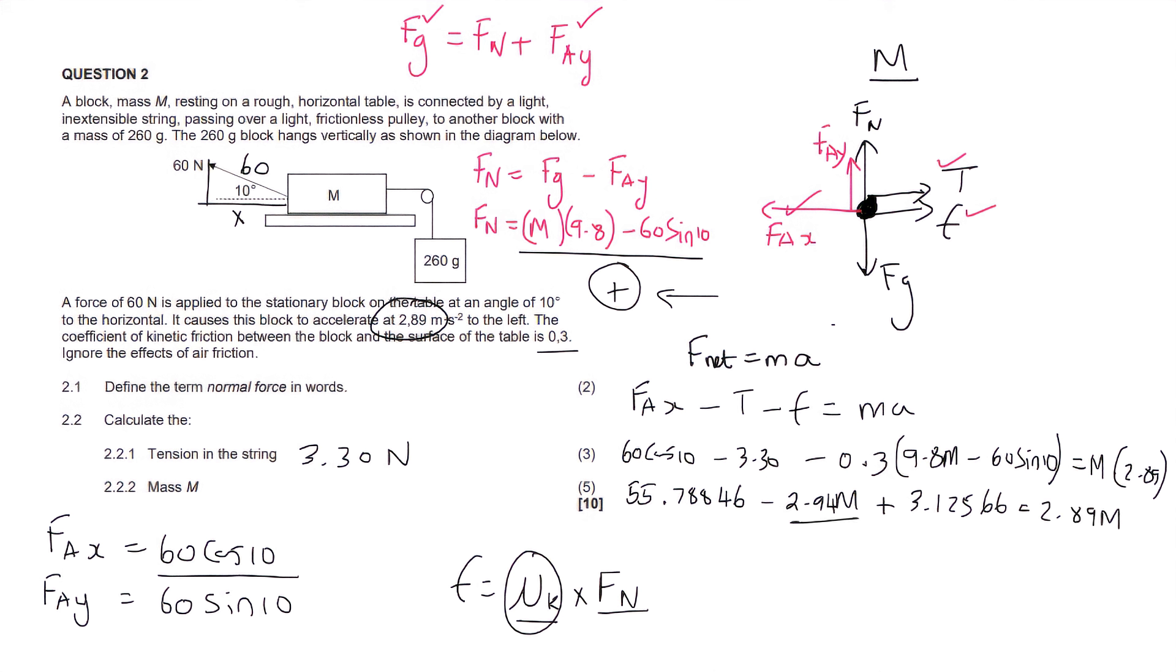And so great. We can see that the only thing that we have as the unknown is M. And so I'm going to put these two expressions together, and I'm going to take the 2.94 over to the other side, where it will become a positive. And so that's going to give us 58.91412 equals to 2.89 M plus 2.94 M. And so on the right-hand side, we get 5.83 M. And on the left, 58.91412. And then you obviously just divide. We should get a final mass of 10.11 kilograms.